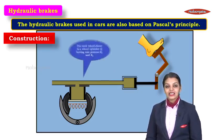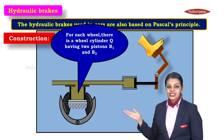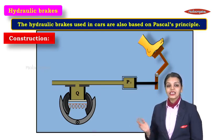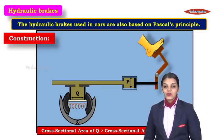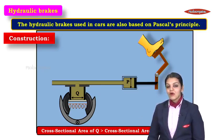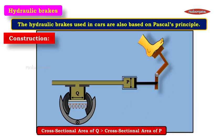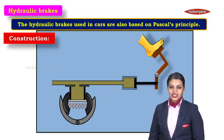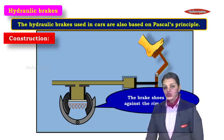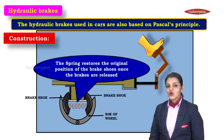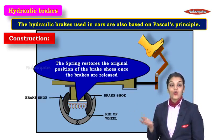The master cylinder P is then connected to a wheel cylinder, and for each wheel there is a wheel cylinder which we call Q. This wheel cylinder Q is connected to two pistons B1 and B2. These two pistons are then pressed against the two brake shoes. What is important to note is that the cross-sectional area of Q is greater than the cross-sectional area of P — the wheel cylinder is greater than the master cylinder. The brake shoes press against the rim of the wheel, and finally there is a spring that restores the original position of the brake shoes once you release the brakes.